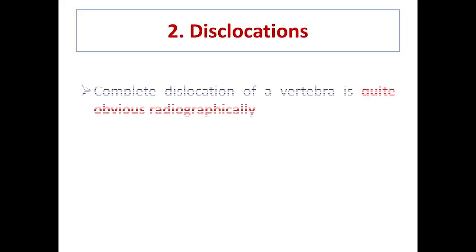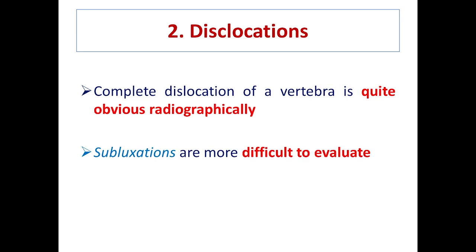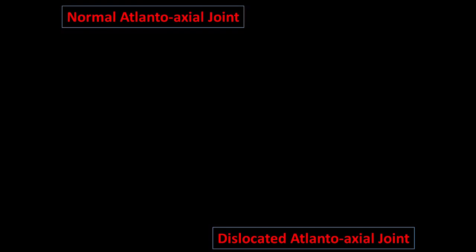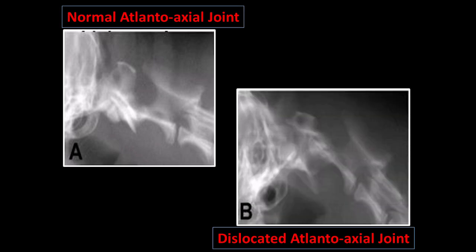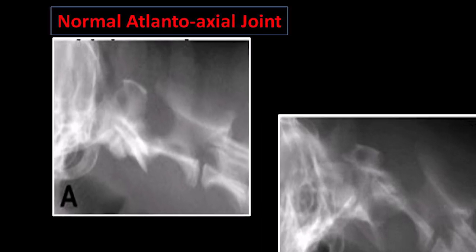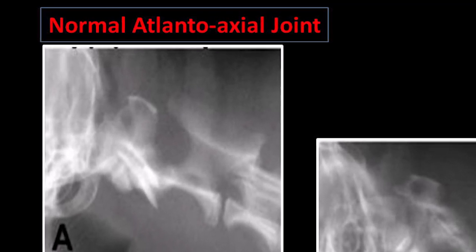Dislocation of a vertebra is quite obvious radiographically, though subluxations are more difficult to evaluate. The atlantooccipital joint is the articulation between the occipital condyle of the skull with C1, called the atlas. Here you can see a normal atlantooccipital joint compared to a dislocated one.